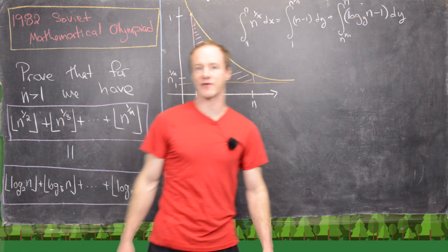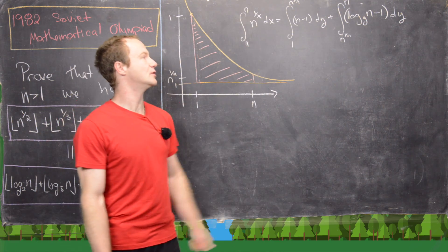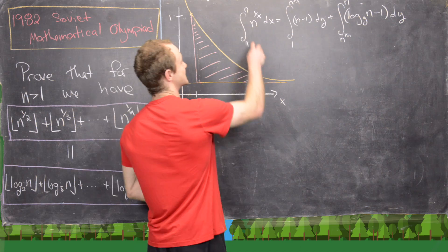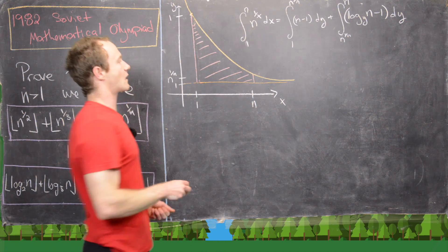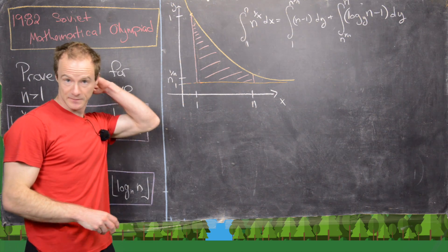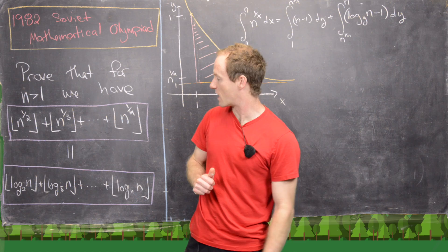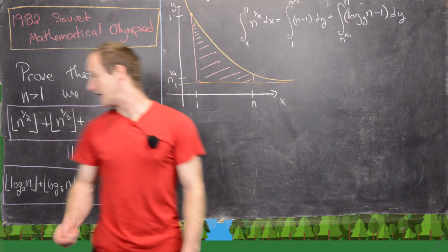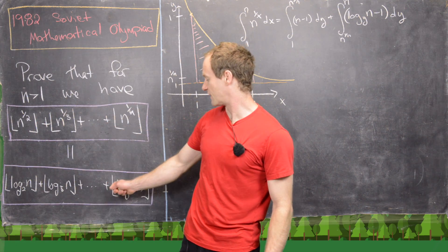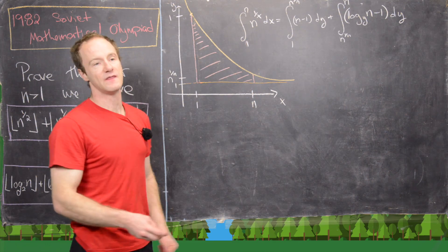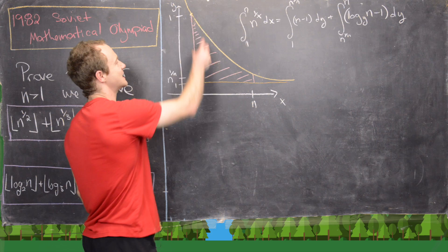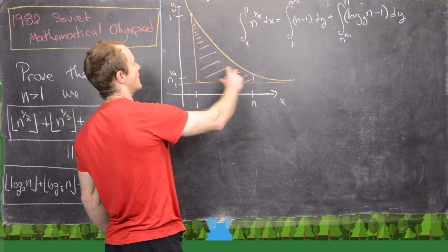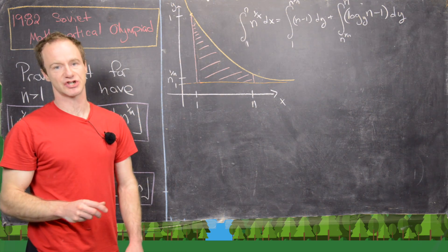Exploring a continuous version of our goal, we found the equality of two integral expressions: one integrating along the x-axis and one integrating along the y-axis. Now this discrete problem is somehow a discrete version of the continuous result we've been building. We want to find the left-hand and right-hand sides of our target equality within this picture.